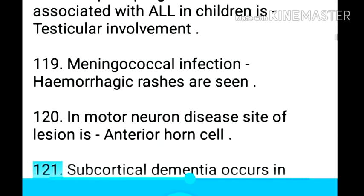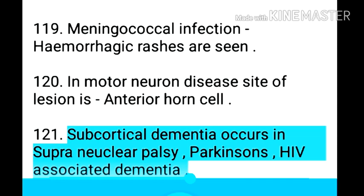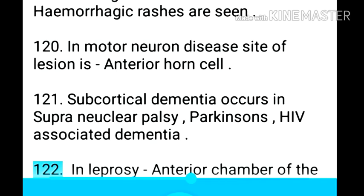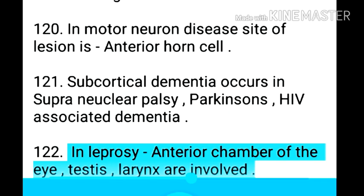Point 122: Subcortical dementia occurs in supranuclear palsy, Parkinson's, and HIV-associated dementia. Point 123: In leprosy, anterior chamber of the testis and larynx are involved.